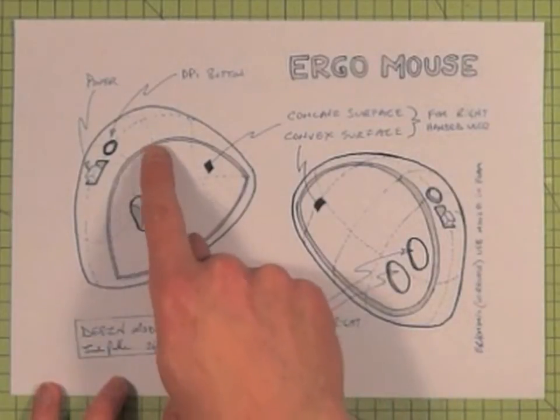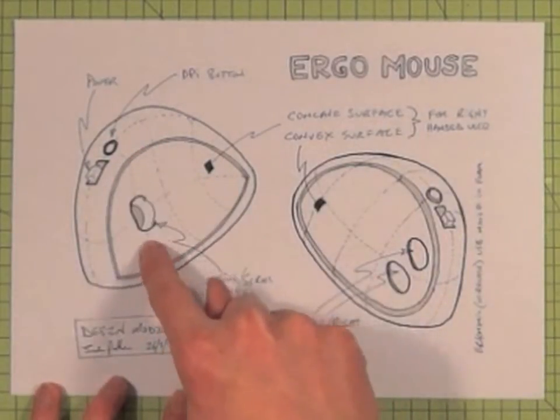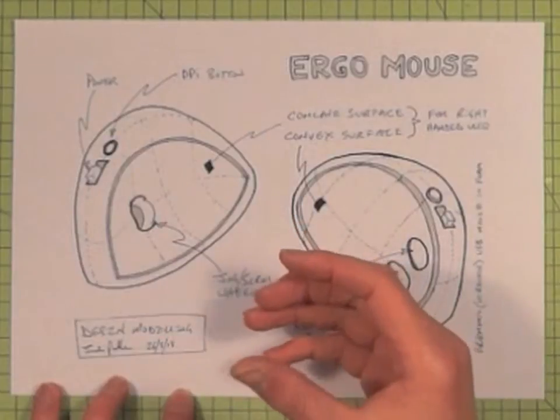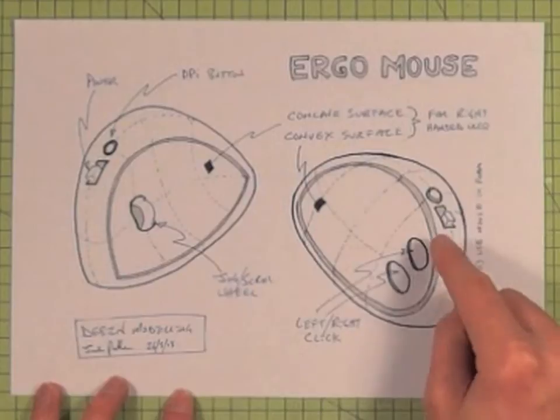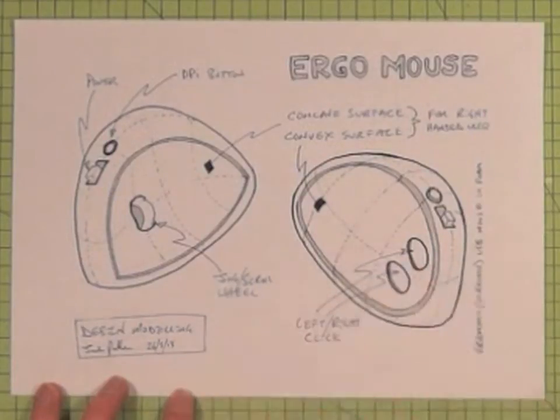But one thing I found was that I quite liked it around where my thumb was concave, so that I could scroll, and then convex, bowing outwards, where my fingers were going to click.